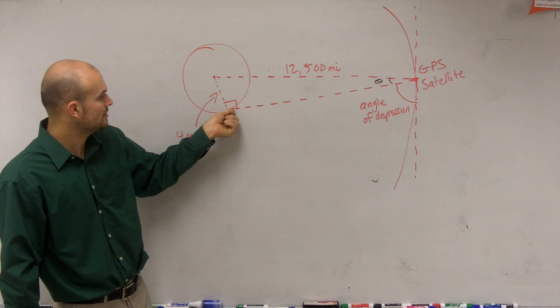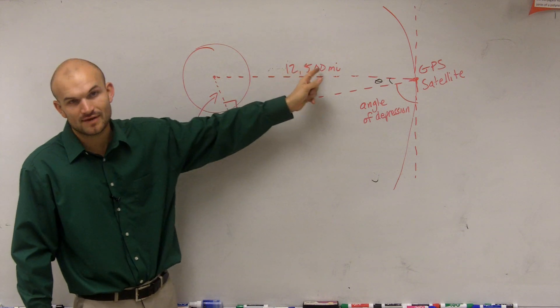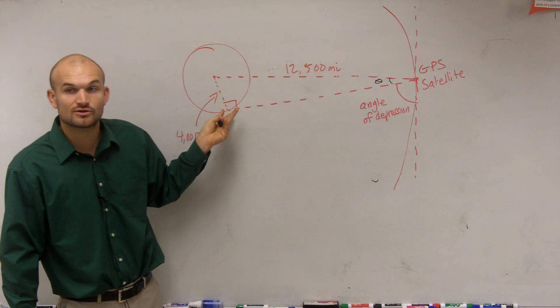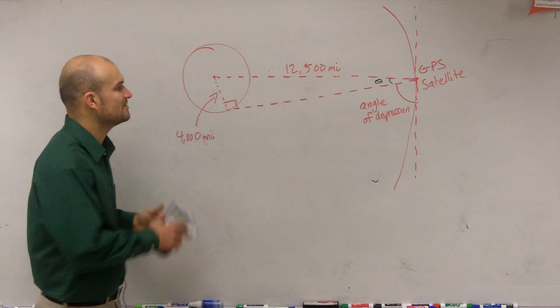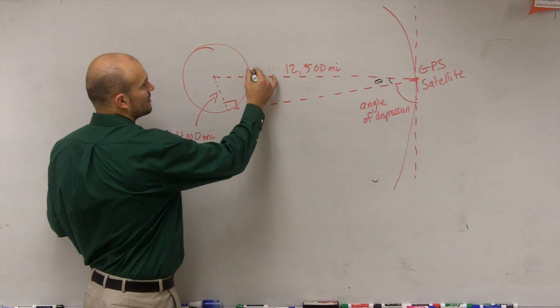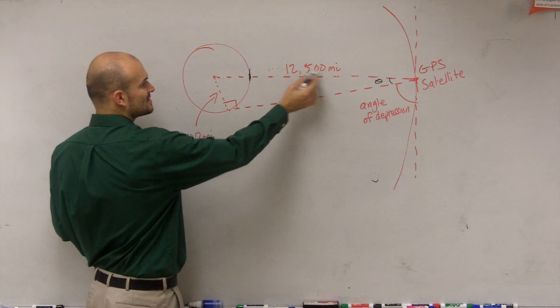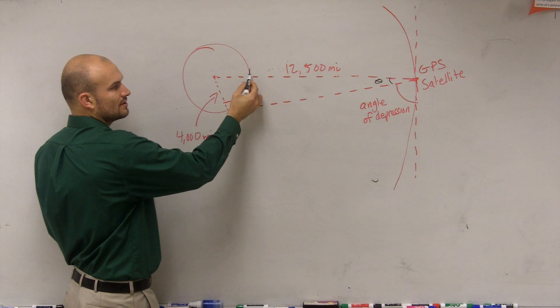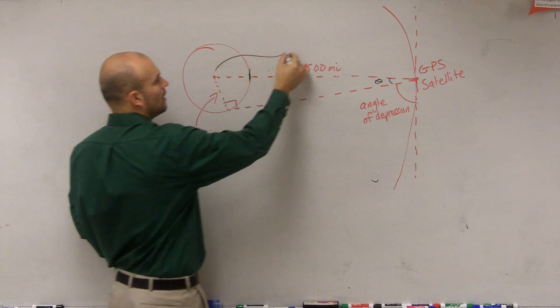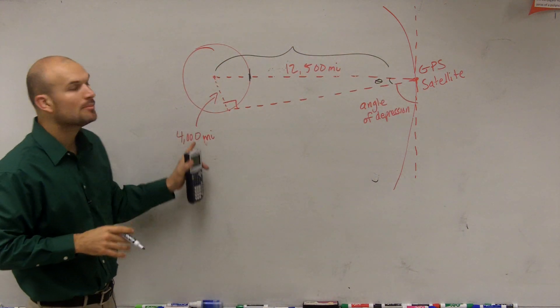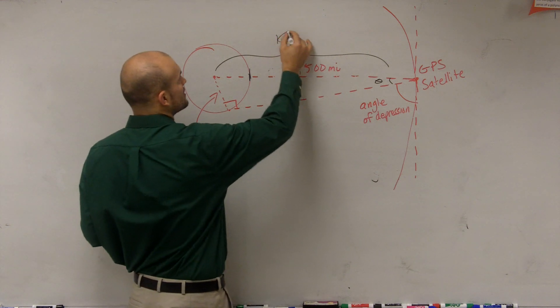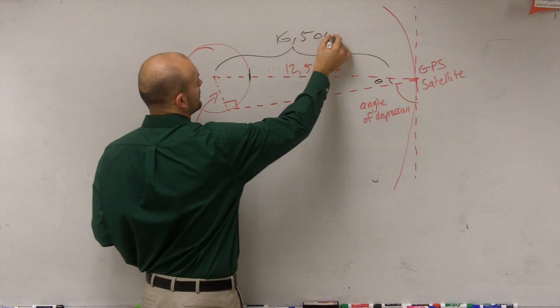Since here's my right angle, I'm going to have one leg and the hypotenuse. So this leg is going to be my opposite side, and then I need to determine what the hypotenuse is. Now it's important for us to understand this distance only goes to the end of the Earth. So therefore, the whole hypotenuse is actually going to be 12,500 plus 4,000, which is 16,500.